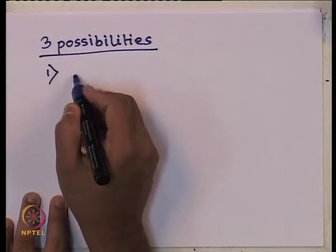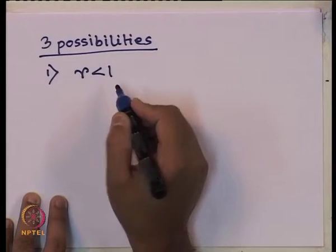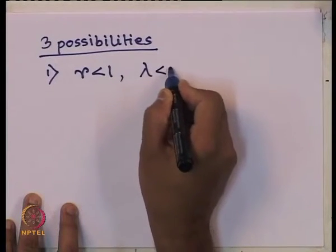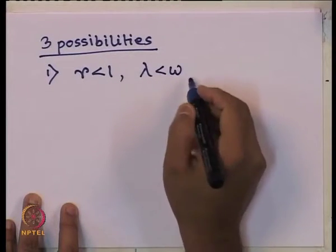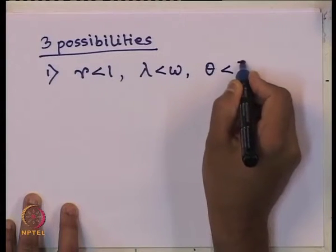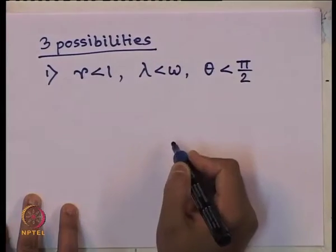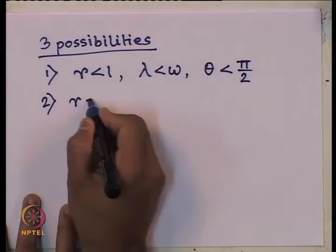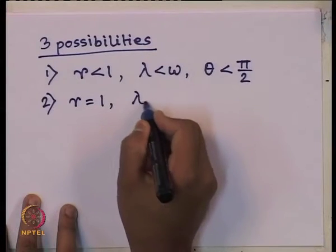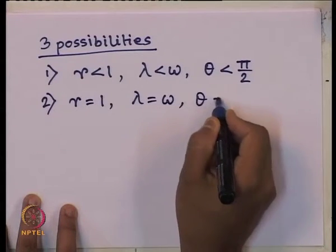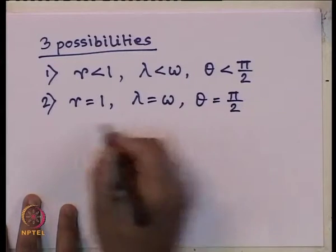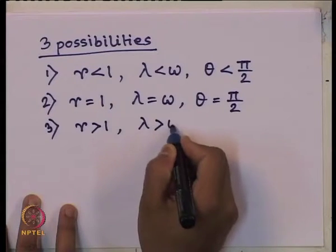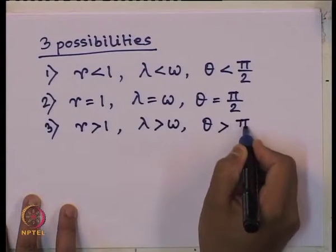The first one is when r less than 1, that is frequency ratio is less than 1, meaning lambda is less than omega. We have theta less than pi/2 — that phase angle. The second case: r equals 1, that is lambda equals omega, theta equals pi/2. And the third case: r greater than 1, theta greater than pi/2.